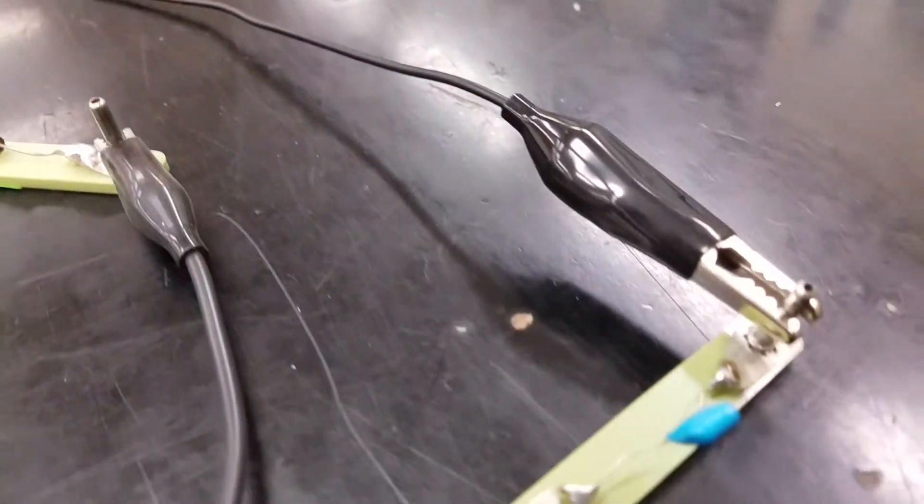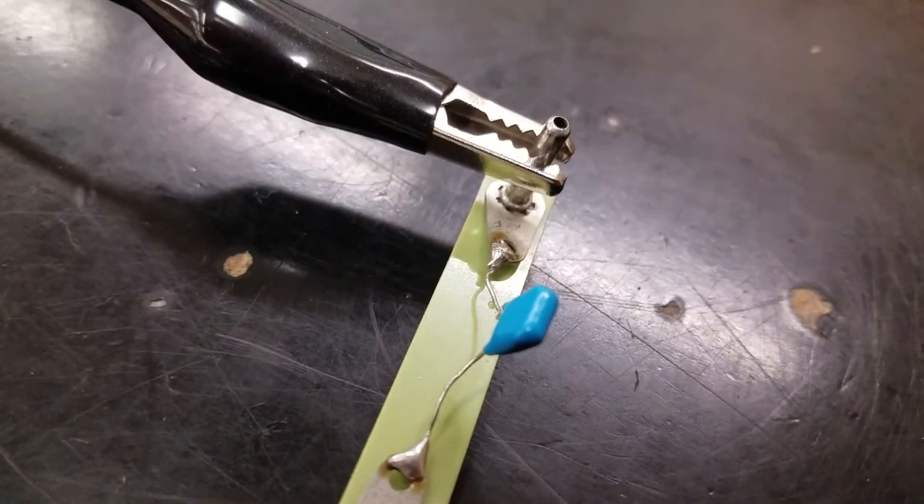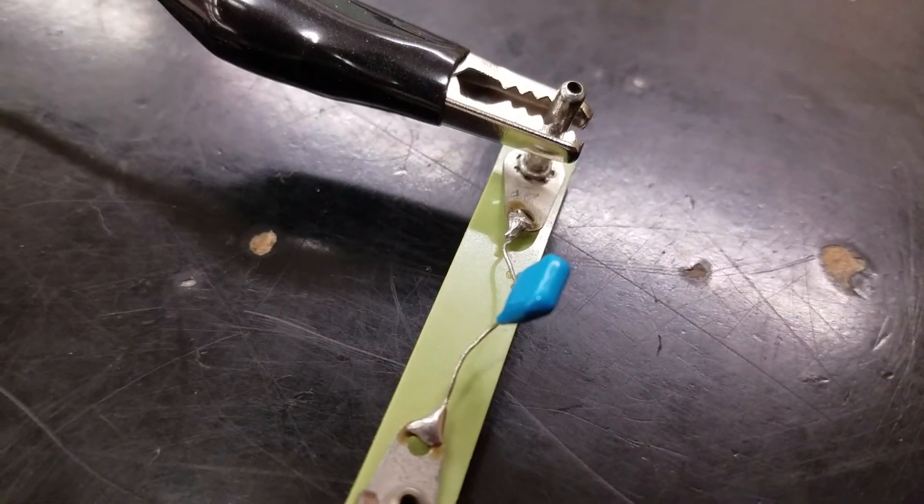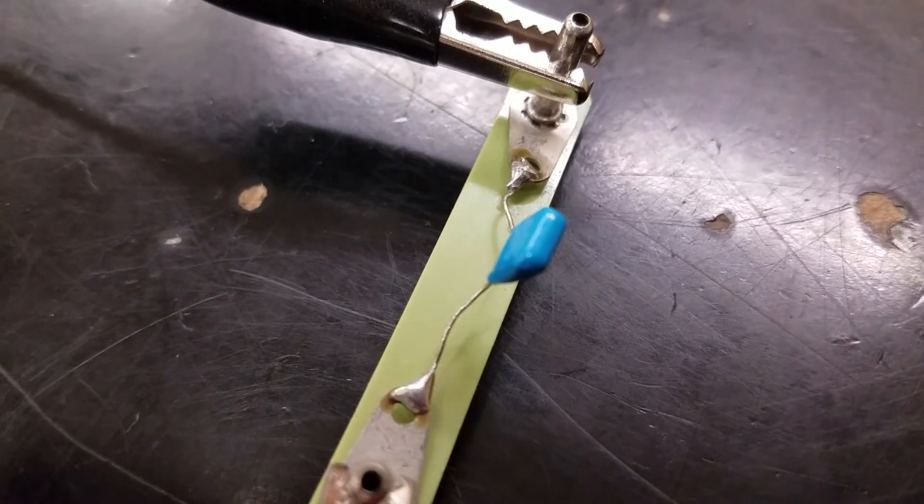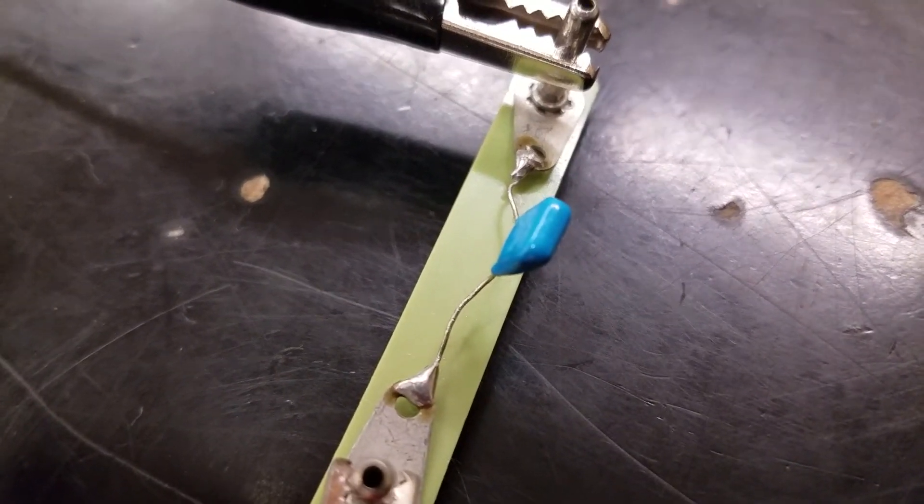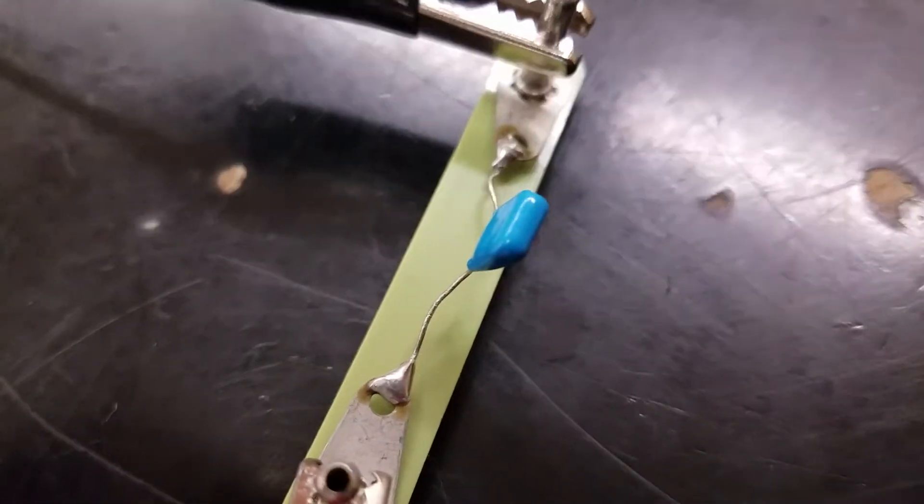We've got a capacitor. That's this blue chiclet looking device right here. We'll use our capacitor meter to measure its capacitance and for this one it's about 0.44 microfarads.